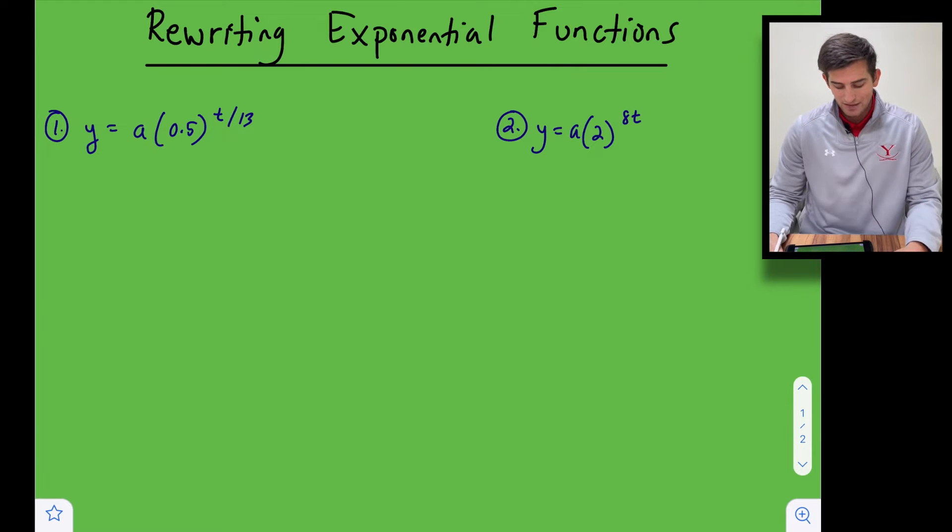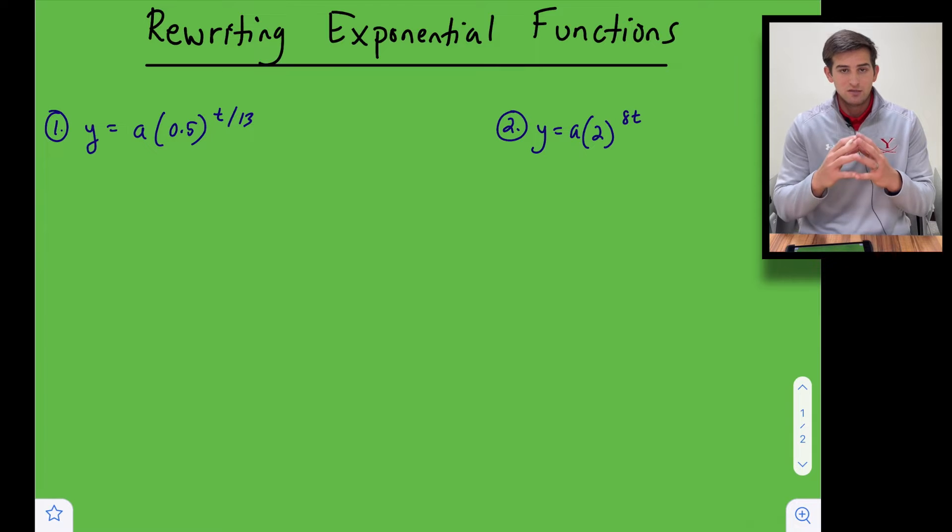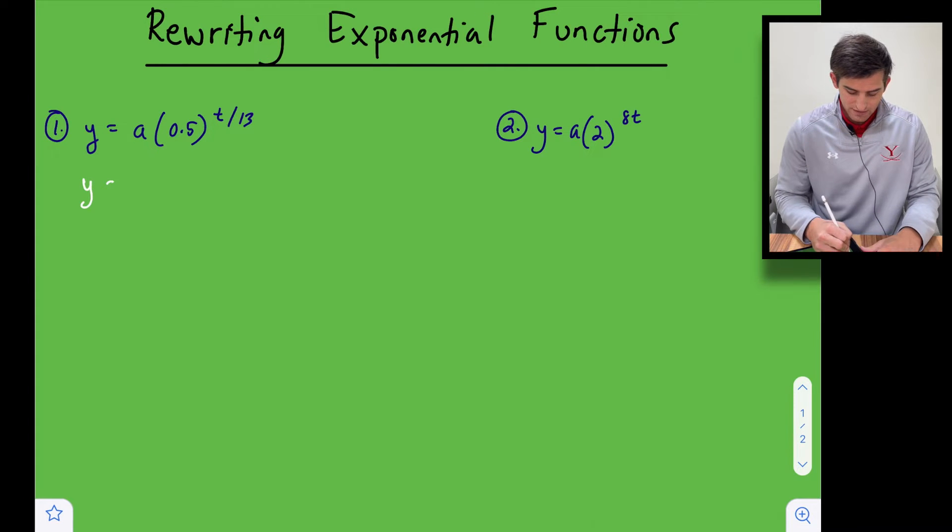All right, number one we have y equals a times 0.5 and we're raising it to the t divided by 13th power. So what we want to do is use our exponent rule that says we can break apart this exponent t divided by 13 and we can write it as 1 over 13 times t. So how it's going to look is like this.